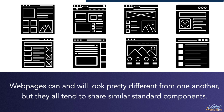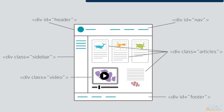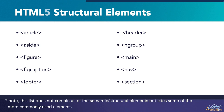Web pages can and will look pretty different from one another, but they all tend to share similar standard components. Prior to HTML5, web developers would commonly wrap the various areas of a web page in a div tag so that they could use that as a styling hook. Many web pages would contain a div with an attribute of header, footer, article, navigation, main, etc. The organization in charge of bringing HTML5 to fruition researched hundreds of thousands of web pages and came up with a list of the most commonly named attribute values, and that's how they decided on the sectioning structural elements.